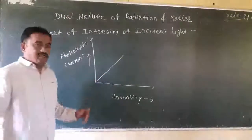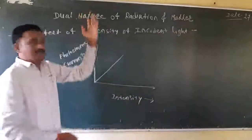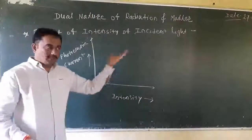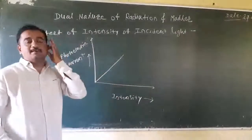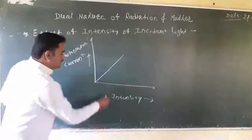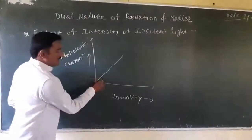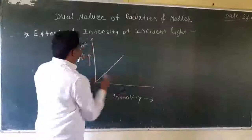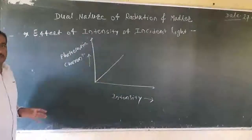This indicates that as intensity increases, photoelectric current also increases. Photoelectric current depends upon the intensity of incident light. If the intensity of light is low, then the photoelectric current is also low. But as the intensity of light increases, the photoelectric current also increases.